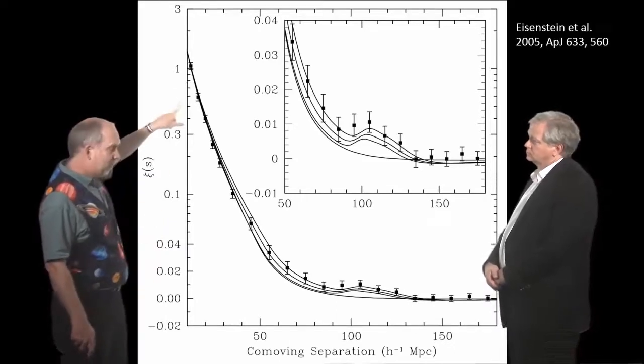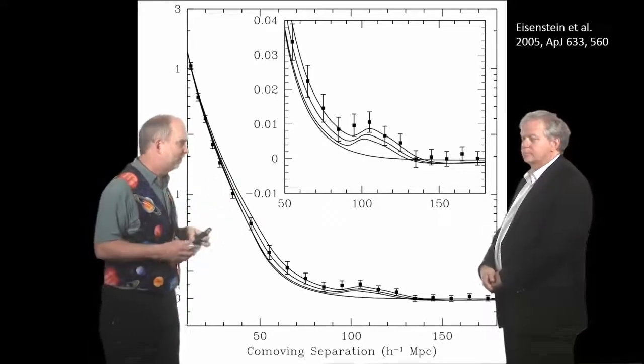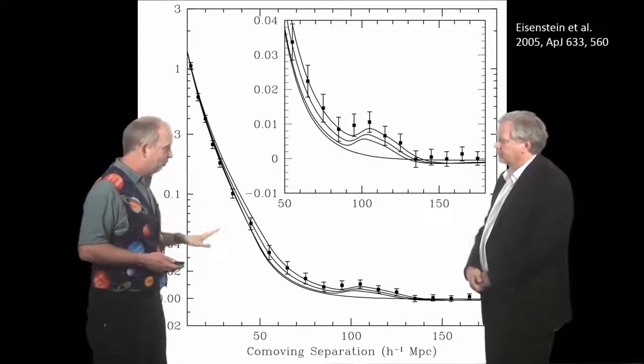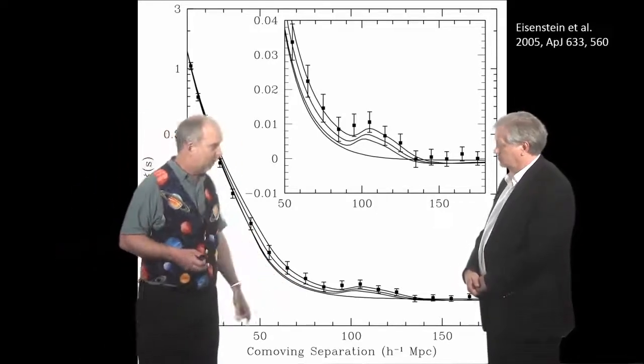And on small scales, galaxies are very strongly clustered. This is just things like the Virgo cluster and our local group. This is just galaxies being sucked towards other galaxies. So, that's not telling us anything about early universe physics. That's telling us things happened more recently.